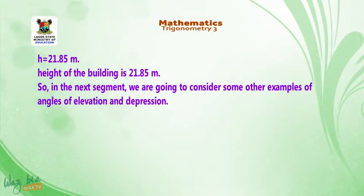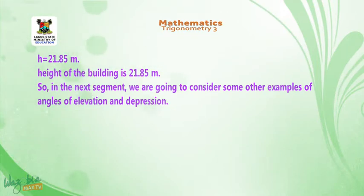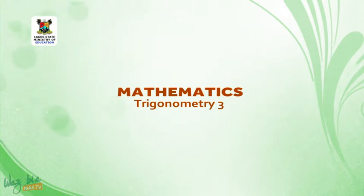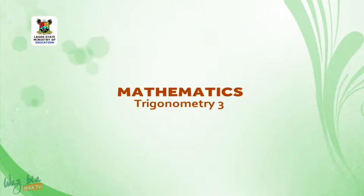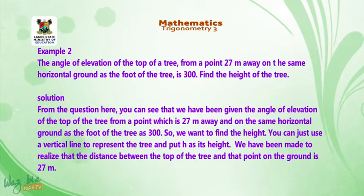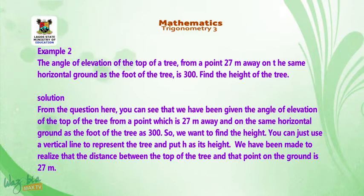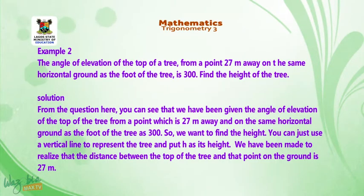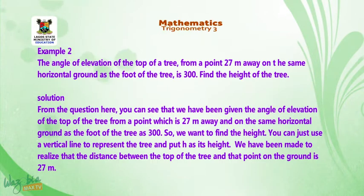In the next segment, we shall consider other examples of angles of elevation and depression. Welcome back to the second segment of today's class. Question 2: the angle of elevation of the top of a tree from a point 27 meters away on the same horizontal ground as the foot of the tree is 30 degrees.